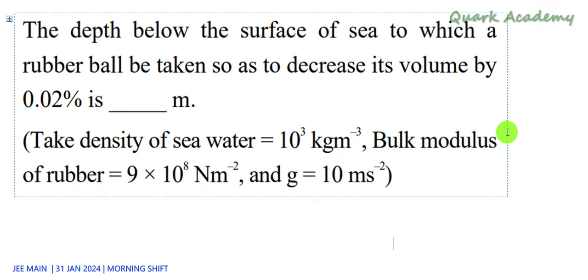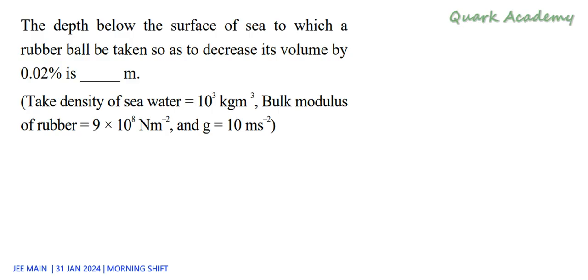We should know two things. One is how to write bulk modulus. So bulk modulus is basically stress by strain. In this case, we can write change in pressure divided by change in volume by volume. So stress is basically force per area, which is the pressure. Strain is change in dimension by original dimension, so change in volume by initial volume.